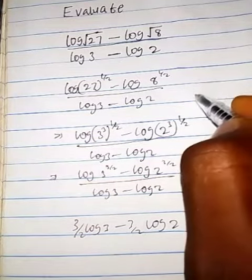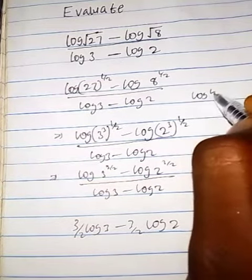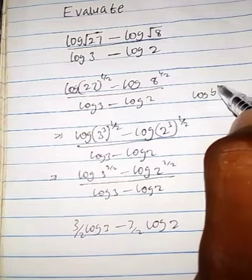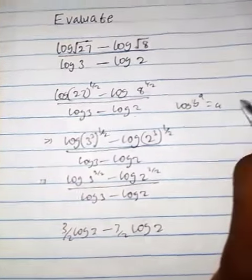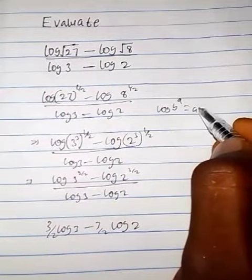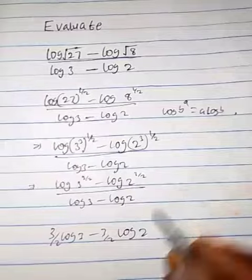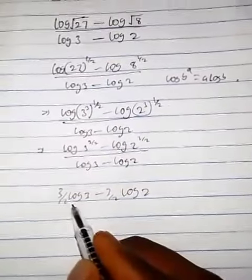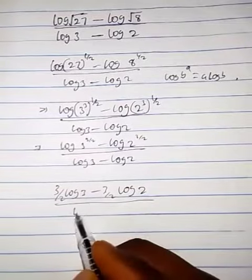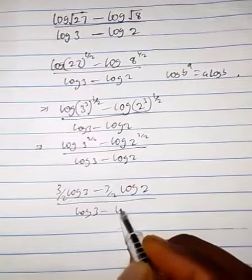Because whenever we have log B raised to power A, it is as if having log A log B. So that's what we apply here. In this case, everything over log 3 minus log 2.